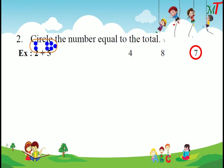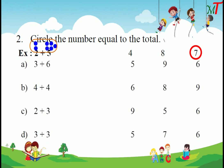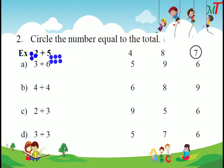Next example: 3 plus 6. That means 3 and then 6. We add 3 plus 6. The total of 3 plus 6 equals 9. So we circle 9.